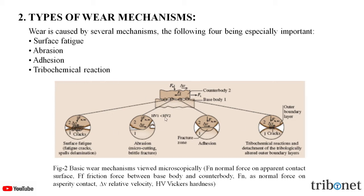In figure 2, the basic wear mechanisms are viewed microscopically. Fn refers to the normal force on the apparent contact surface. Ff is the frictional force between the base body and the counter body. FN is the normal force on the asperity contact. Delta V is the relative velocity and HV is the Vickers hardness.